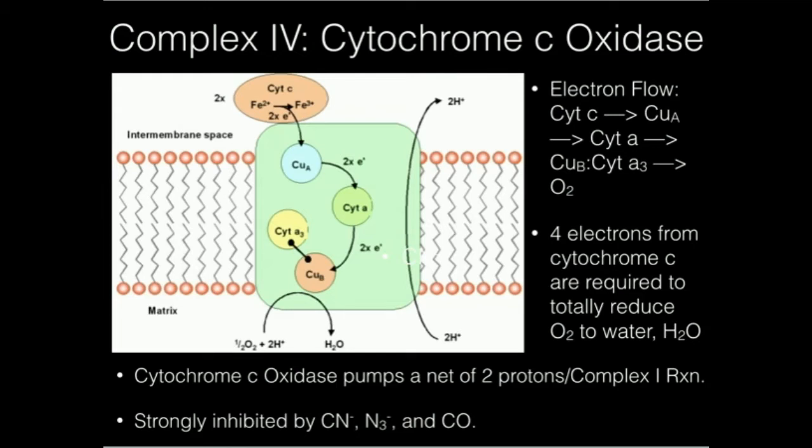The electron is going to specifically go to copper B, and this binuclear complex right here, because they exist together, is referred to as the oxygen splitting complex.